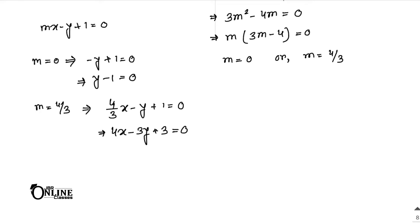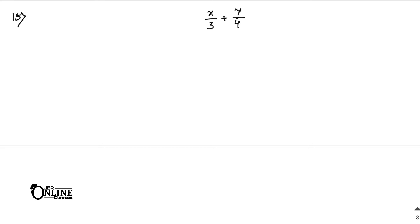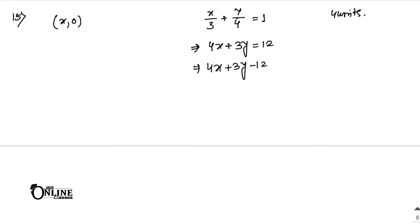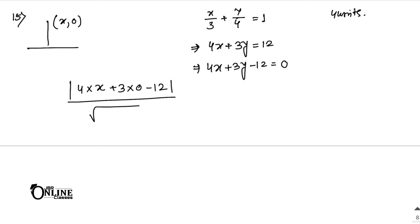Sum number 15: find the point on the x-axis whose perpendicular distance from the line x/3 plus y/4 = 1 is 4 units. Let the point on the x-axis be (x, 0). The LCM is 12, so the line becomes 4x plus 3y = 12, or 4x plus 3y minus 12 = 0. Applying the perpendicular distance formula: |4x plus 3(0) minus 12| divided by root over (16 plus 9) = 4.